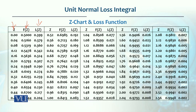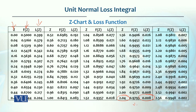Looking at this chart — because we have a large number of values, it covers many pages. For example, the closest value shown is Z = 2.04, which corresponds to a loss function L(Z) of 0.008. That value of L(Z) is then multiplied by the standard deviation to calculate the expected number of stockout units — that is, our expected loss within a year. All three values — Z, F(Z), and L(Z) — are provided in this chart. However, unlike the standard normal table which fits on one or two pages, this chart spans many more pages.